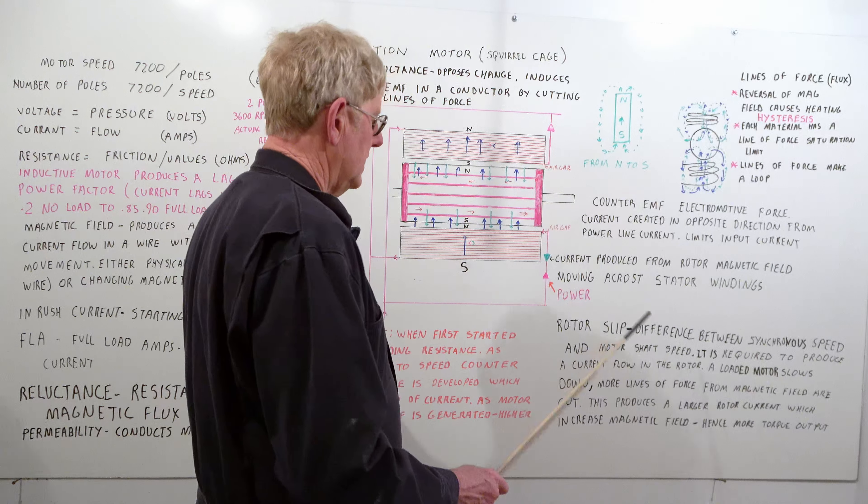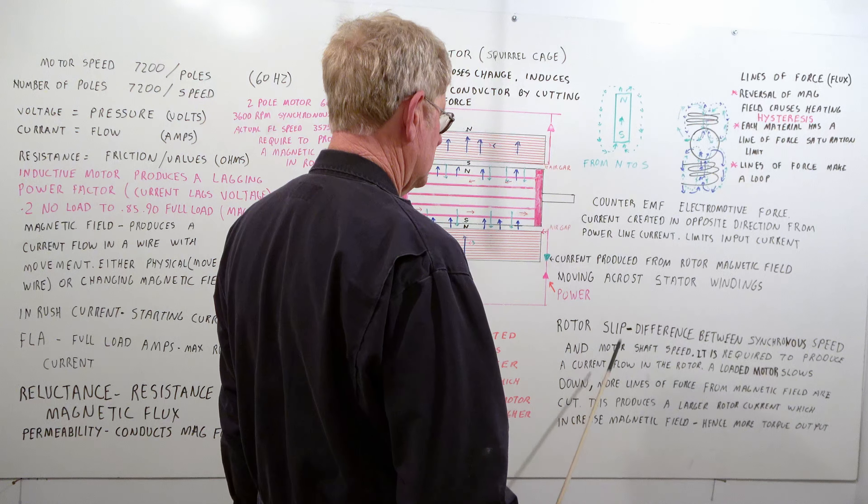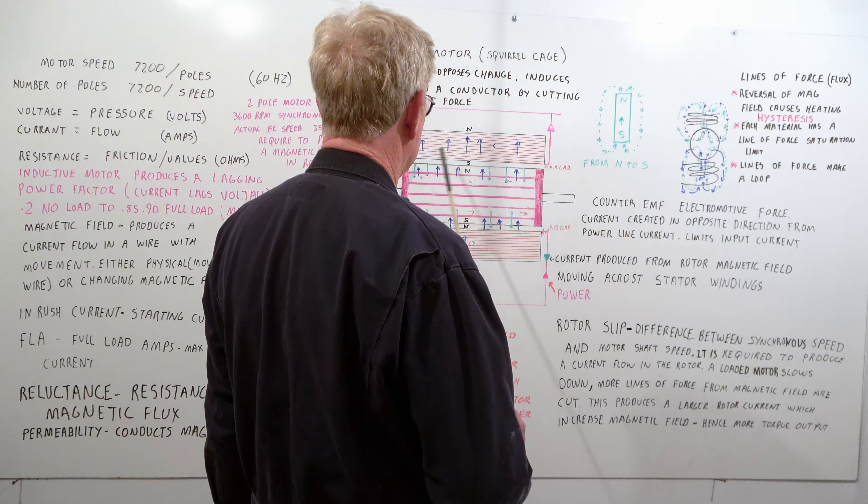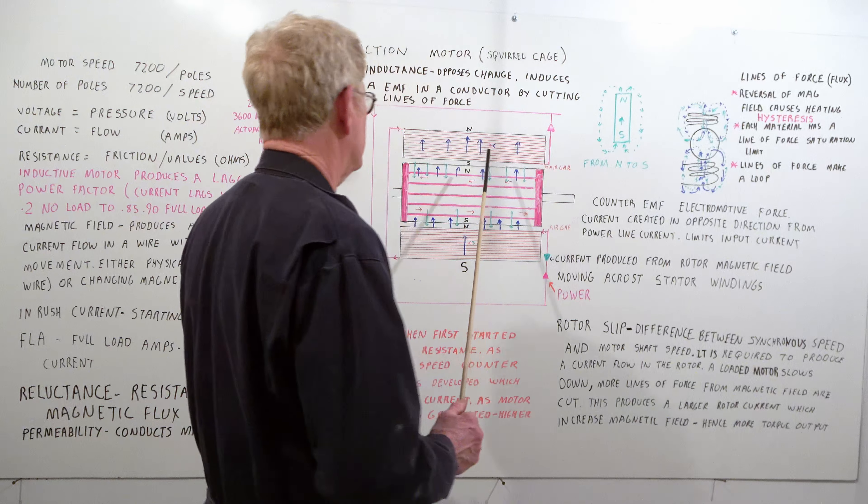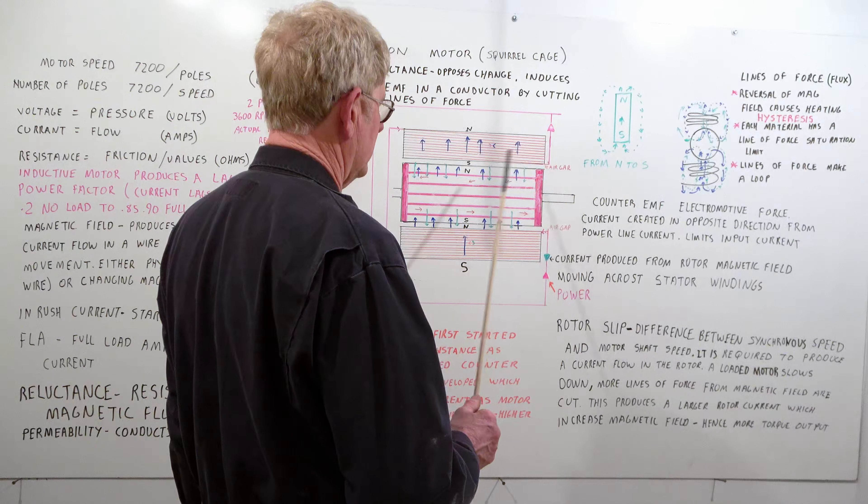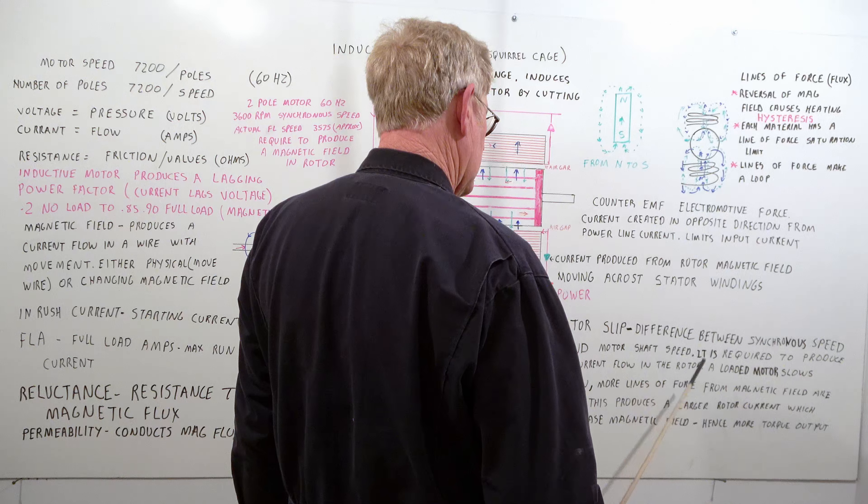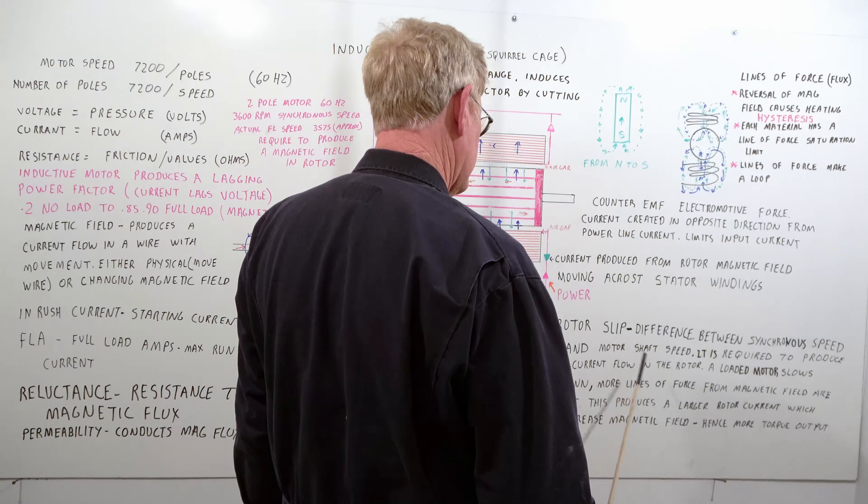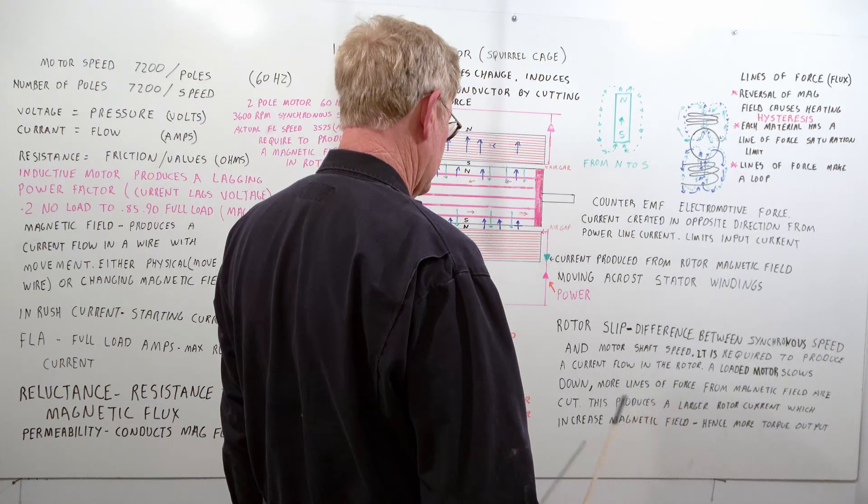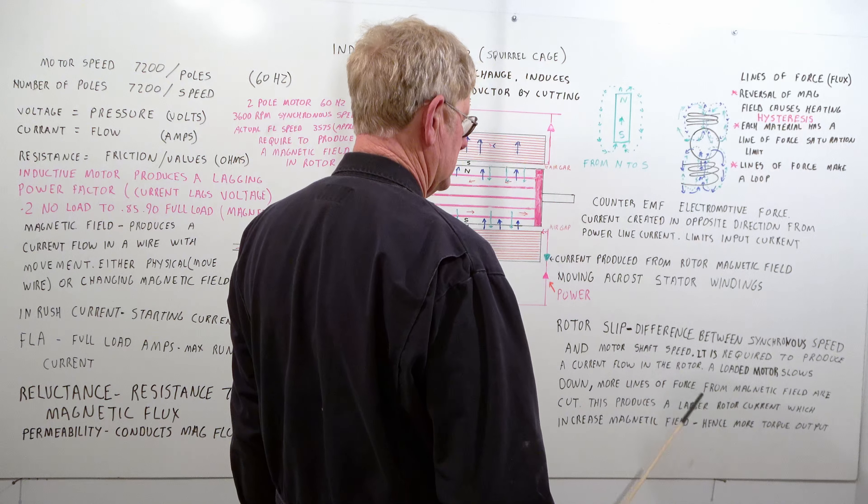Rotor slip. This is the key to these motors. It's the difference between the synchronous speed and the motor shaft speed. The field here wants to run 3600. Induction motor cannot run at 3600. You have to run a little bit less to provide the magnetizing current in here. Now a synchronous motor will run 3600 but that's a little different design. Rotor slip is required to produce a current flow in the rotor. A loaded motor slows down. More lines of force from the magnetic field are cut. This produces larger rotor current which increases magnetic field. Hence you have more torque output.